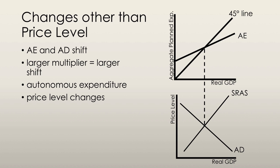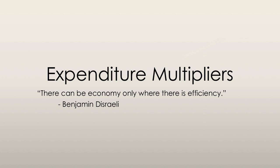When the money wage rate and the price level have increased by the same percentage, real GDP is again equal to potential GDP and the economy returns to long-run equilibrium. The point here is that in the long run, the multiplier is equal to zero — aggregate demand will shift back to where it originally was. That was the series on expenditure multipliers.